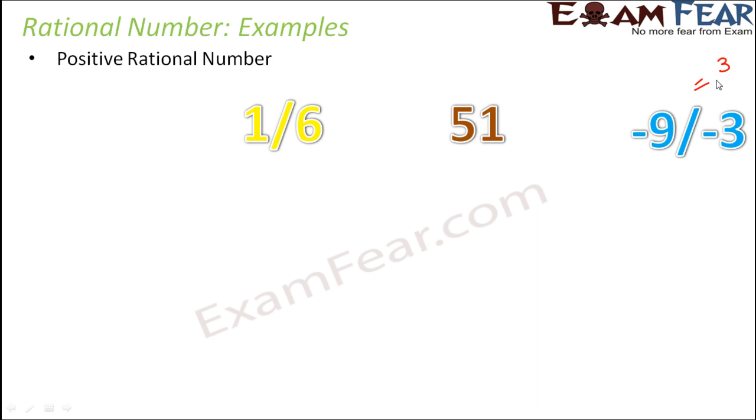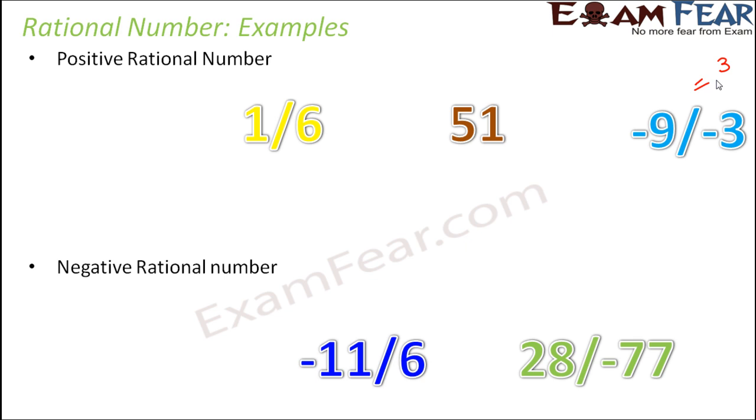So basically, a positive rational number is one in which both the numerator and the denominator have the same sign. Either both of them are positive or both of them are negative. Whereas in case of negative rational number, only one of them is positive. For example, either the numerator negative, denominator positive or the denominator negative, numerator positive. So they are examples of negative rational numbers.